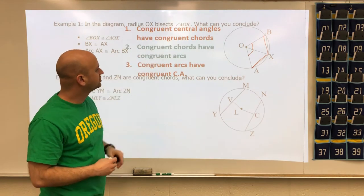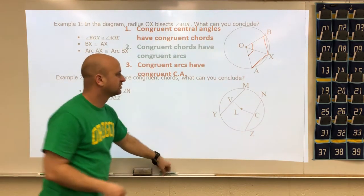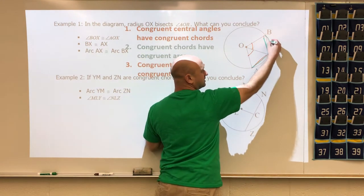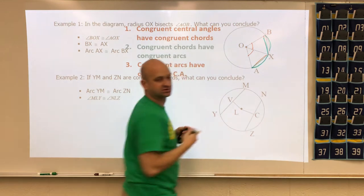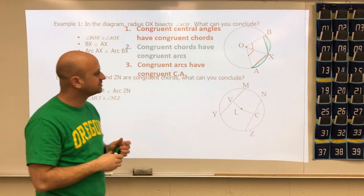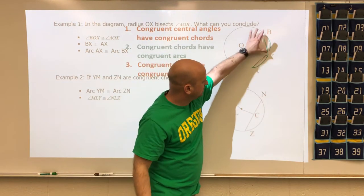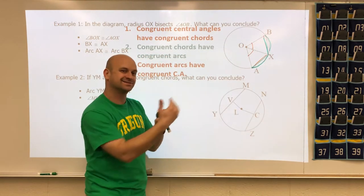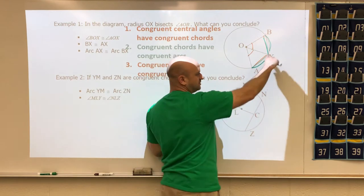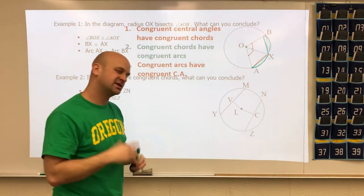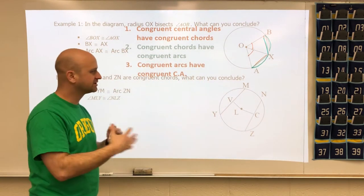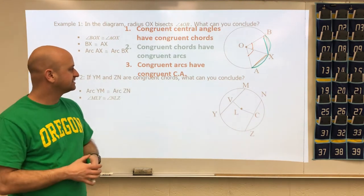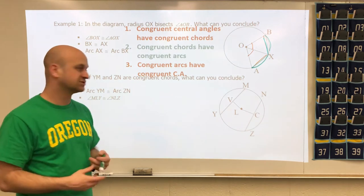The second conclusion: congruent chords have congruent arcs. If this chord is congruent to that chord, then this arc is congruent to that arc — like two equal pieces of crust on the outer edge. The third conclusion: congruent arcs have congruent central angles.